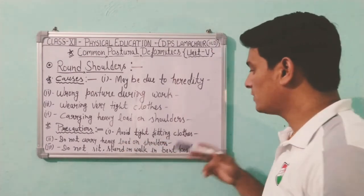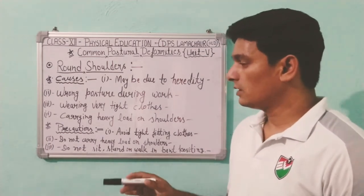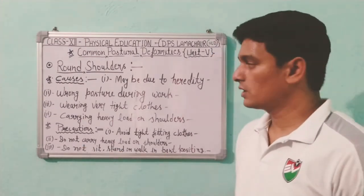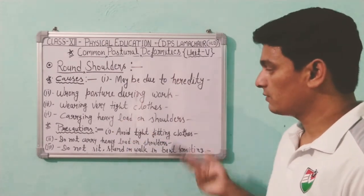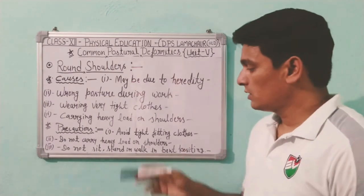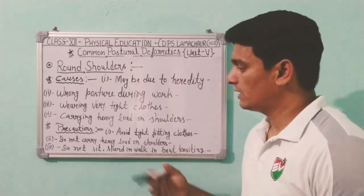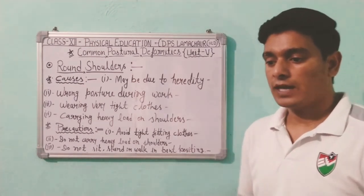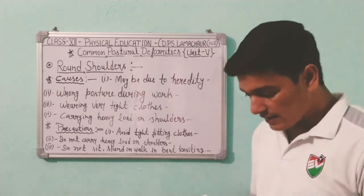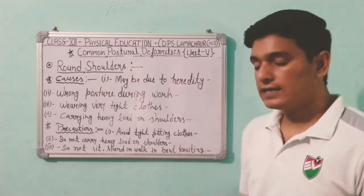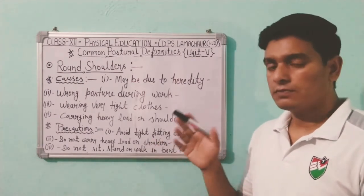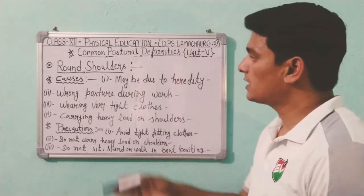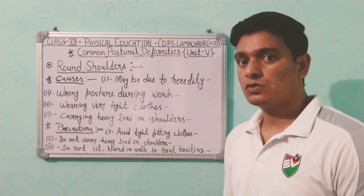Precautions for round shoulder: avoid tight fitting clothes, as this helps prevent the deformity. Do not carry heavy loads on the shoulders. Do not sit, stand, or walk in a bent position — many people have the habit of bending their neck while walking, standing, or running, and this habit can cause round shoulder deformity.